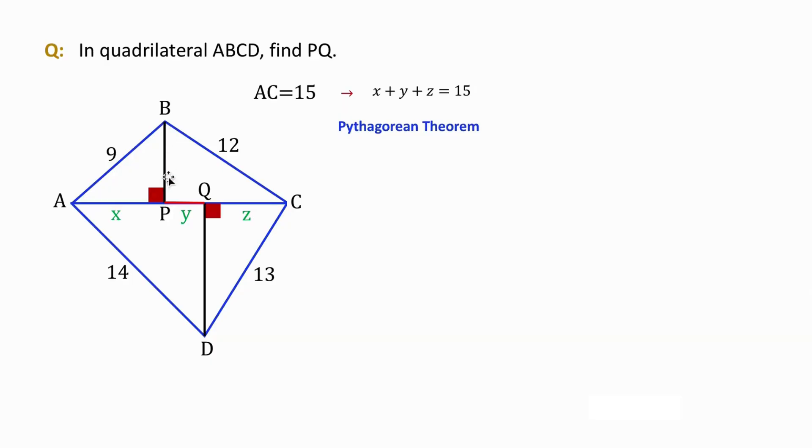Let's show the height of BP by H and DQ by K. So these two lines are perpendicular to the diagonal AC.